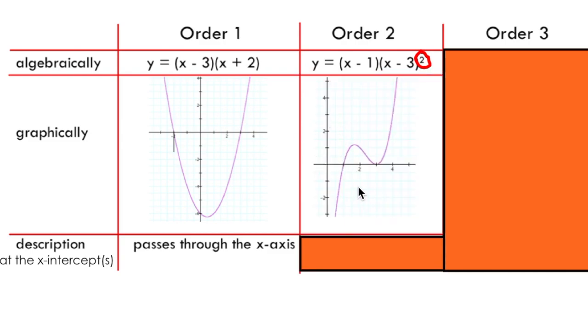Graphically, this makes my function behave in such a way that the function simply touches the x-axis at the x-intercept instead of passing directly through the x-axis, as it did in the case of an order 1 x-intercept. So we say an order 2 x-intercept touches the x-axis at the x-intercept as opposed to passing through the x-axis.